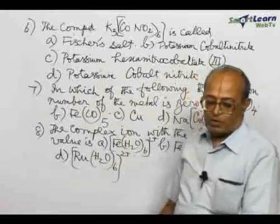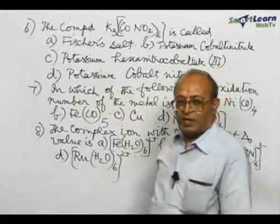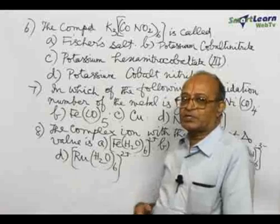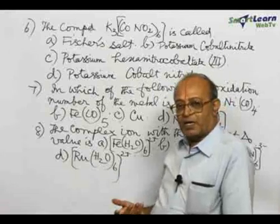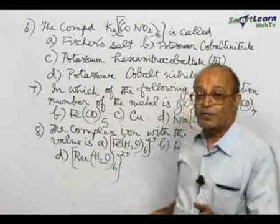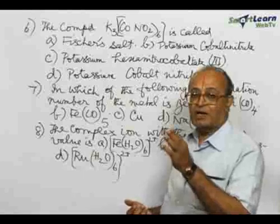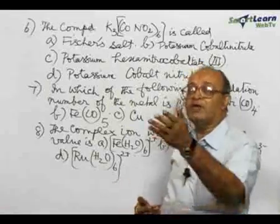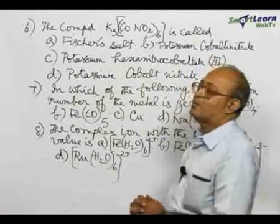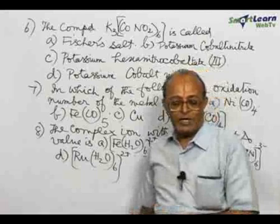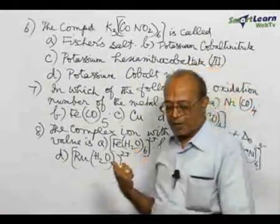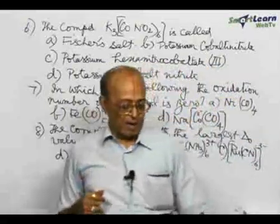You probably remember a complex compound may contain a cation which is complex, or an anion which is complex, or both cation and anion being complex in nature. All these are possible. Here in this particular example, the complex ion is the anion.